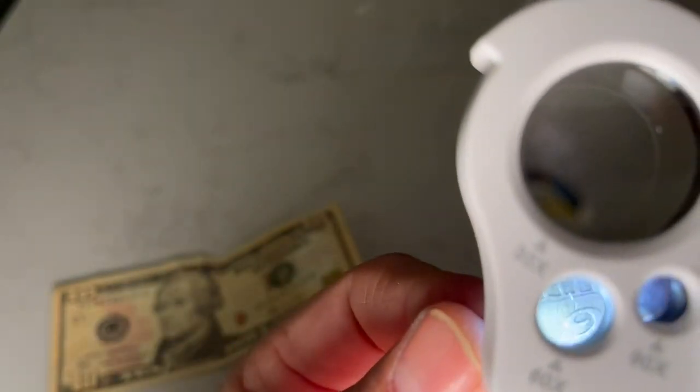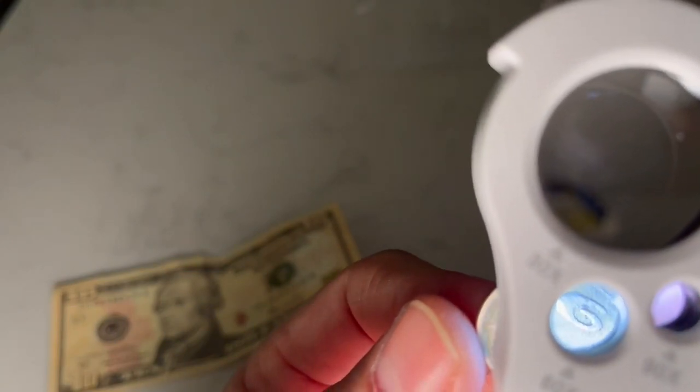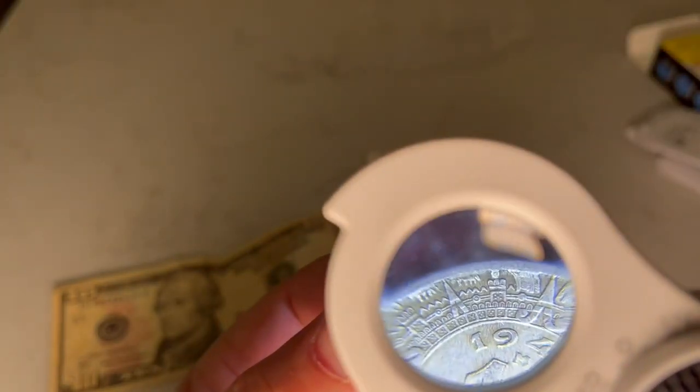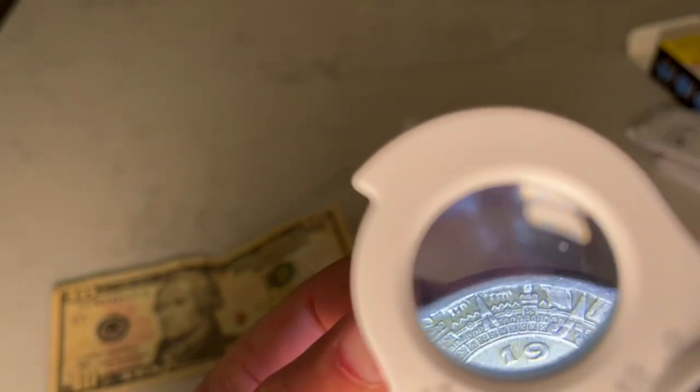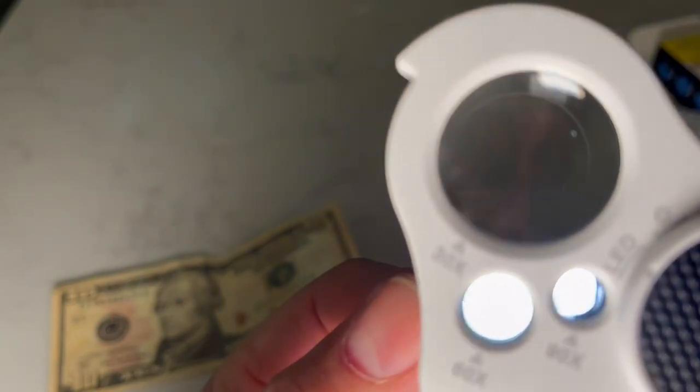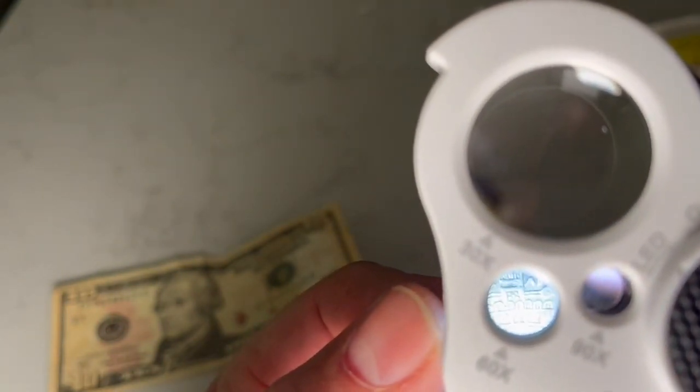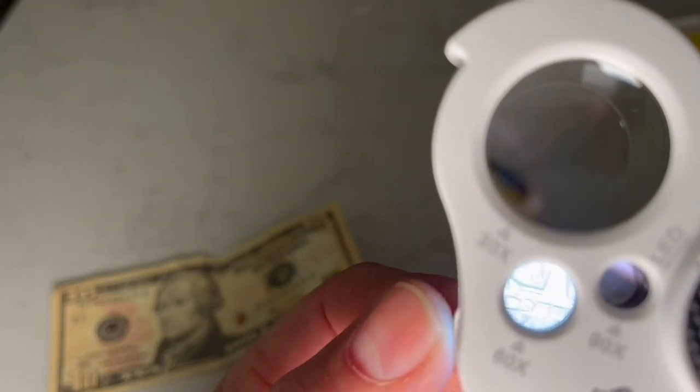Let's see if I can get it under the 60 power. There you go. 1946. And I don't know if I'll be able to get it under the 90 power. No, I can't. But you can definitely see the intricate design. I don't know if that's the Aztec calendar around the border of the coin. Definitely not something I'd be able to see with the naked eye or even with my reading glasses on.